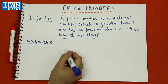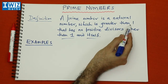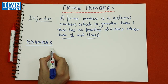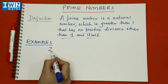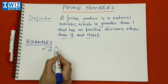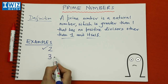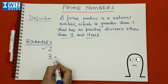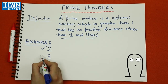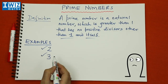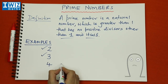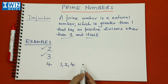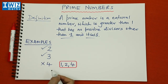We consider natural numbers greater than one, so we start with two. The only natural numbers dividing two are one and two, so two is a prime number. If we consider three, the only natural numbers dividing it are one and three, so three is a prime number. If we consider four, the divisors are one, two, and four — so four is not a prime number.